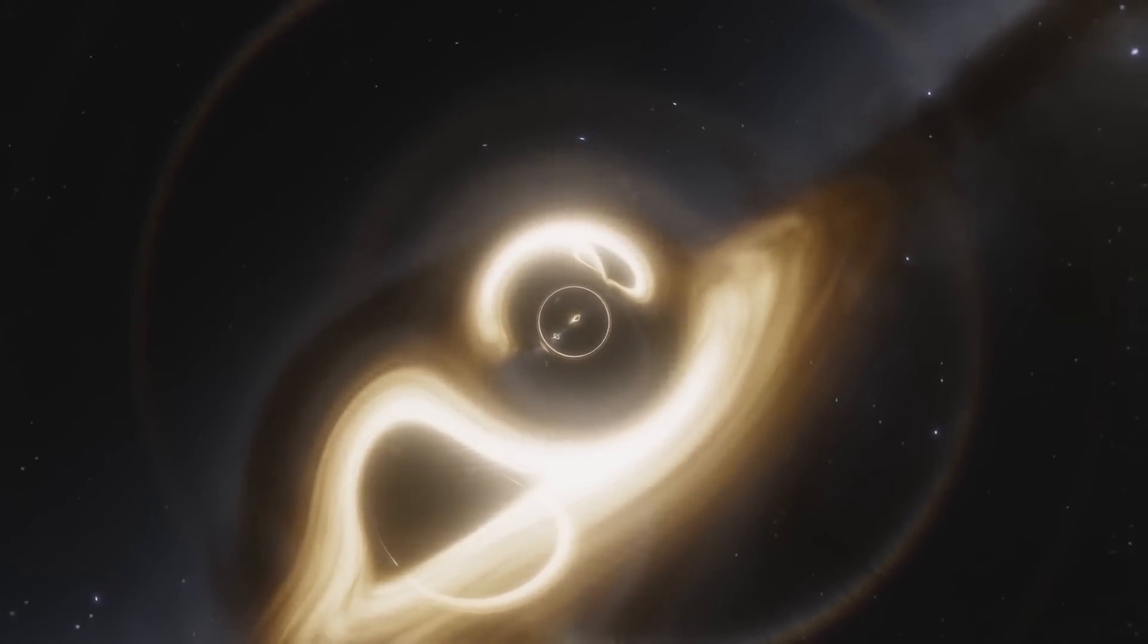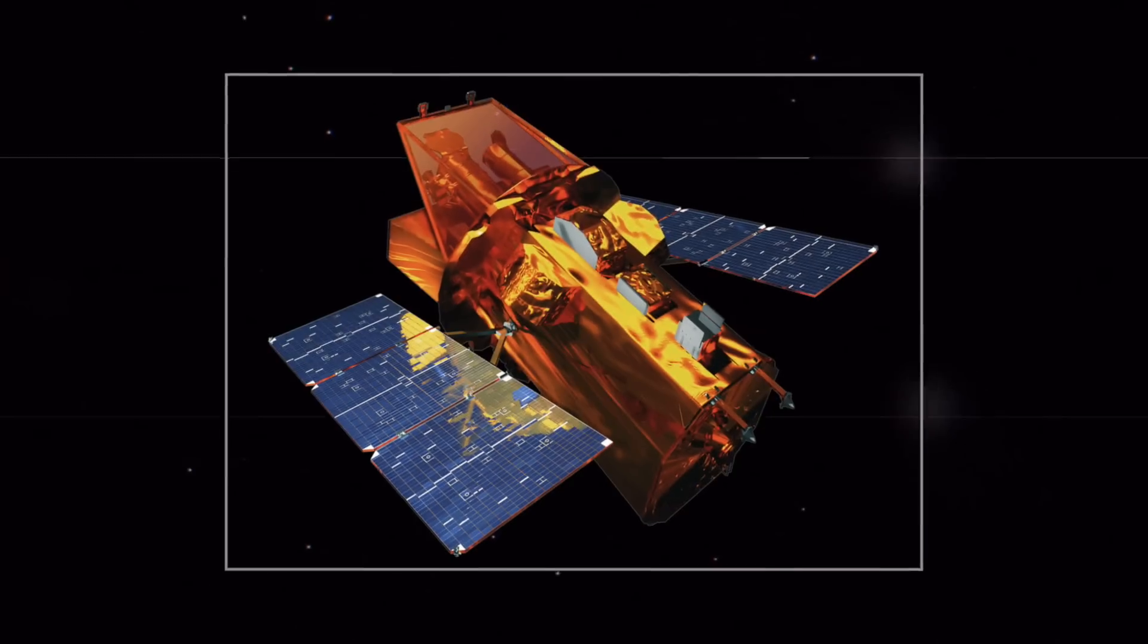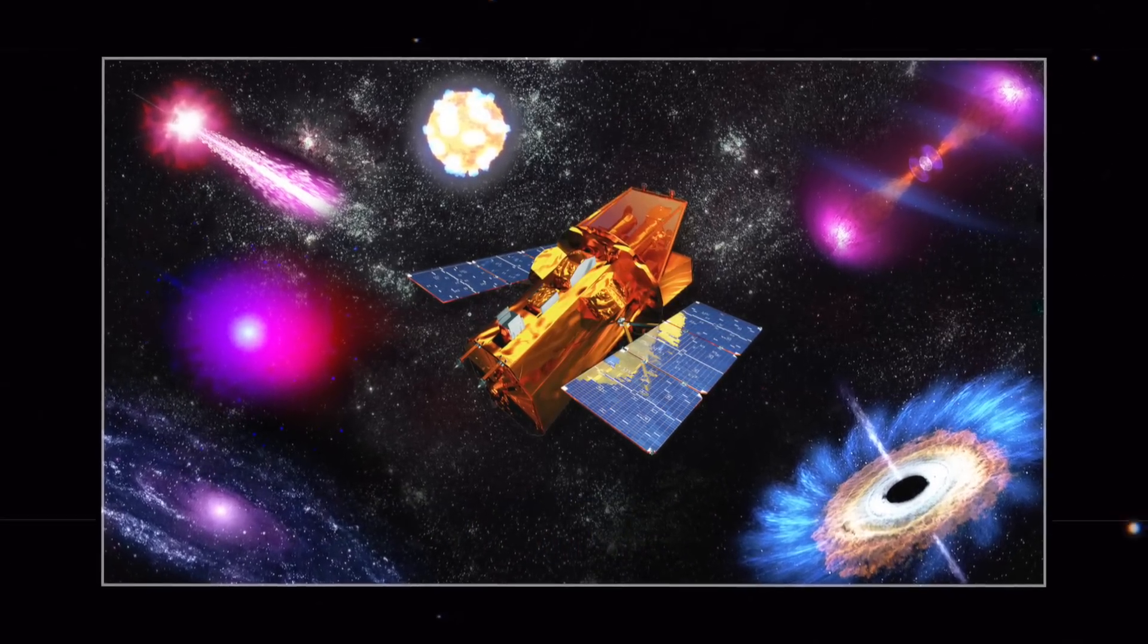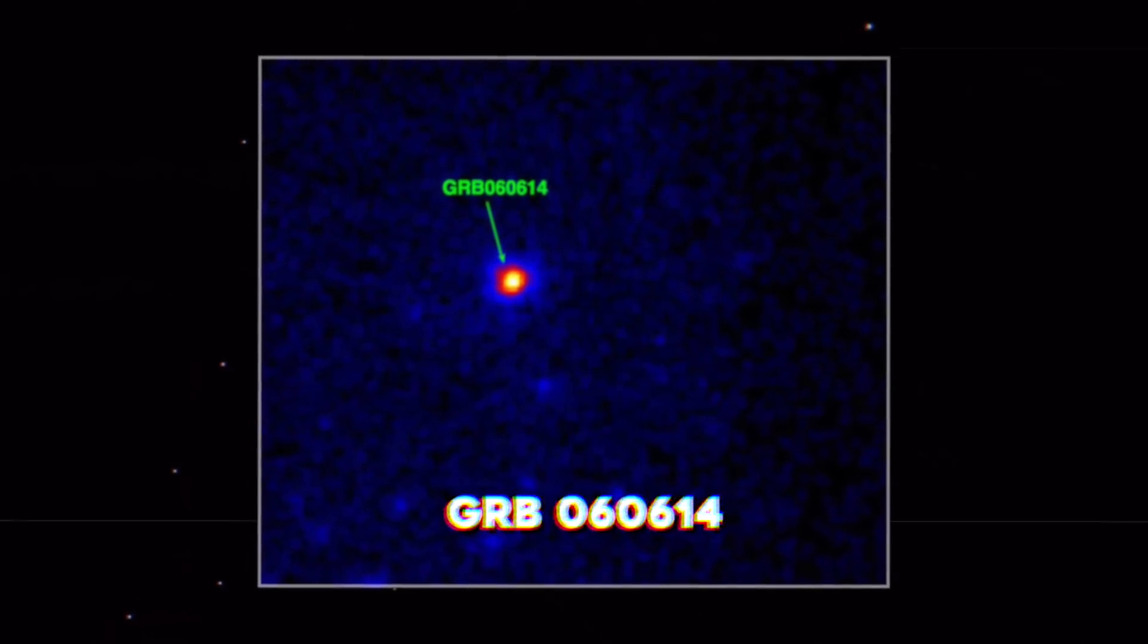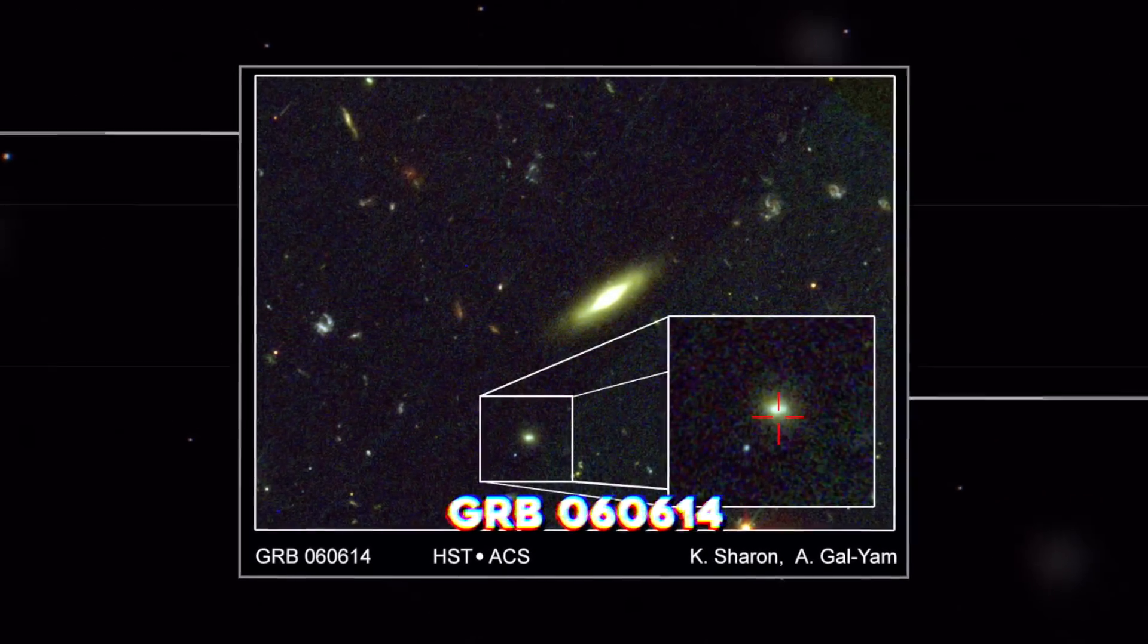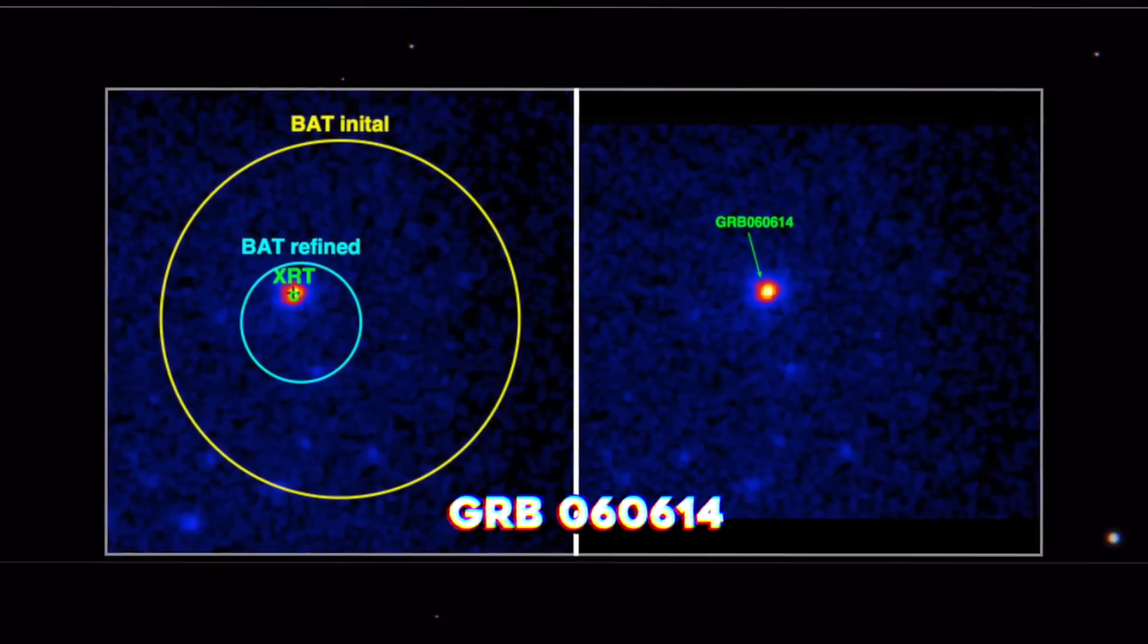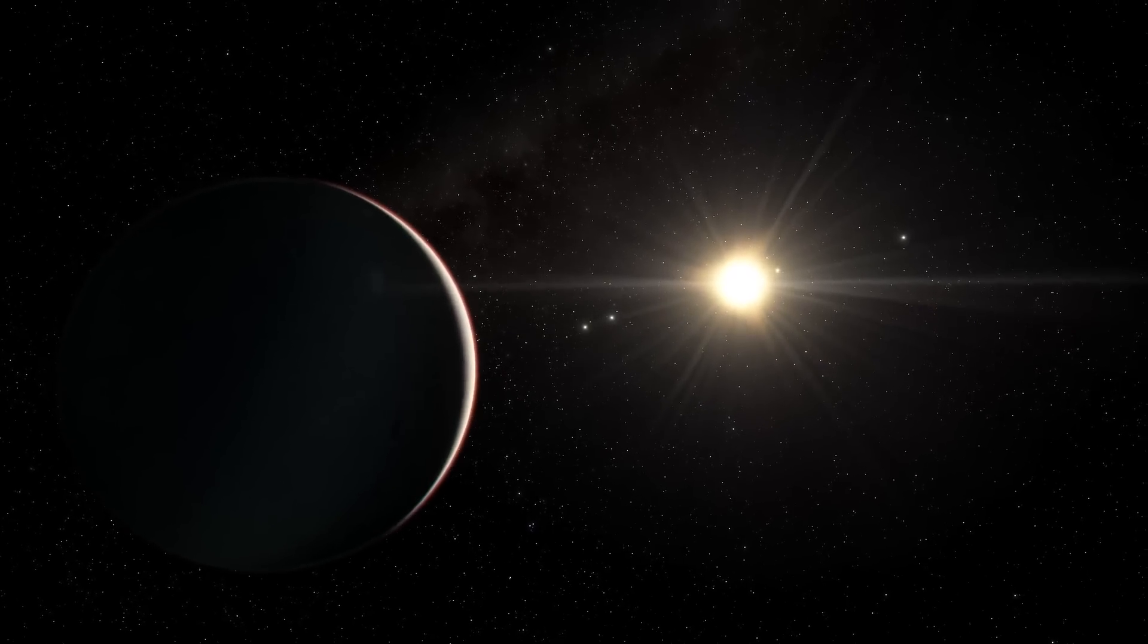In fact, we might have already seen one. On a balmy summer day in 2006, NASA's Swift satellite captured an exceptionally powerful gamma-ray burst called GRB 060614 in a very strange region of the sky. Whereas these kinds of bursts fall into one of two categories—short burst and long burst—and are usually associated with a supernova, GRB 060614 didn't do either.